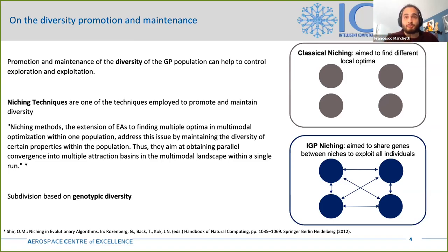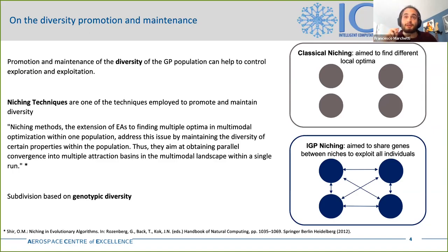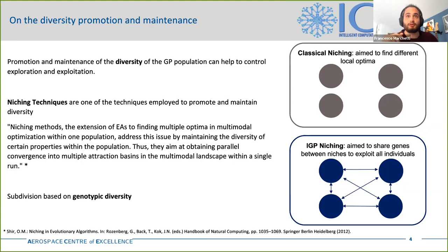As depicted in the picture below, the goal is to have a flow of genes between the different niches, so as to avoid losing well-performing genes contained in a globally poor performing individual. The way these niches are created is based on the genotypic diversity of the individuals, which is their length, as I explain better in the next slides. The subdivision can also be done in other ways, for example based on the phenotypic diversity, which is the fitness of the individuals.